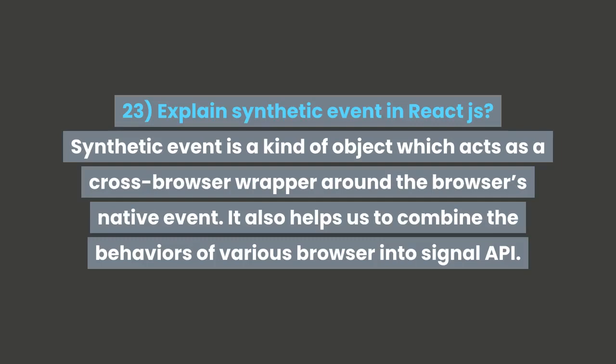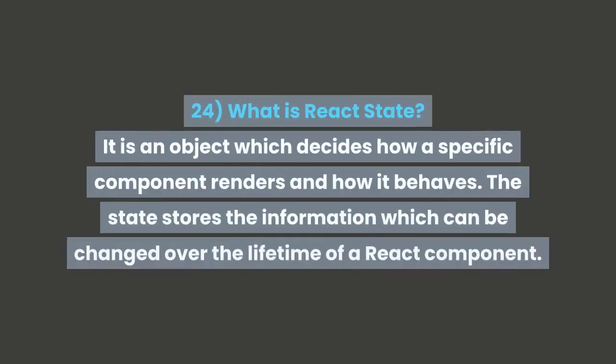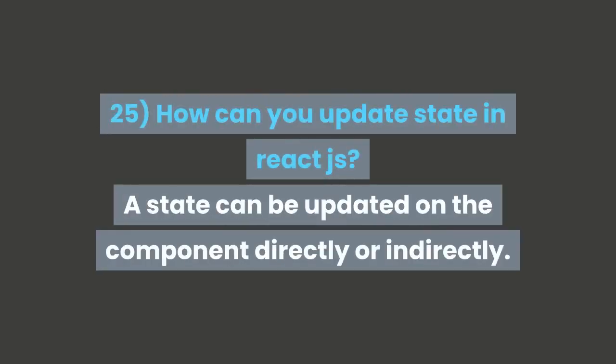Question 24: What is React state? It is an object which decides how a specific component renders and how it behaves. The state stores information which can change over the lifetime of a React component. Question 25: How can you update state in React.js? A state can be updated on the component directly or indirectly.